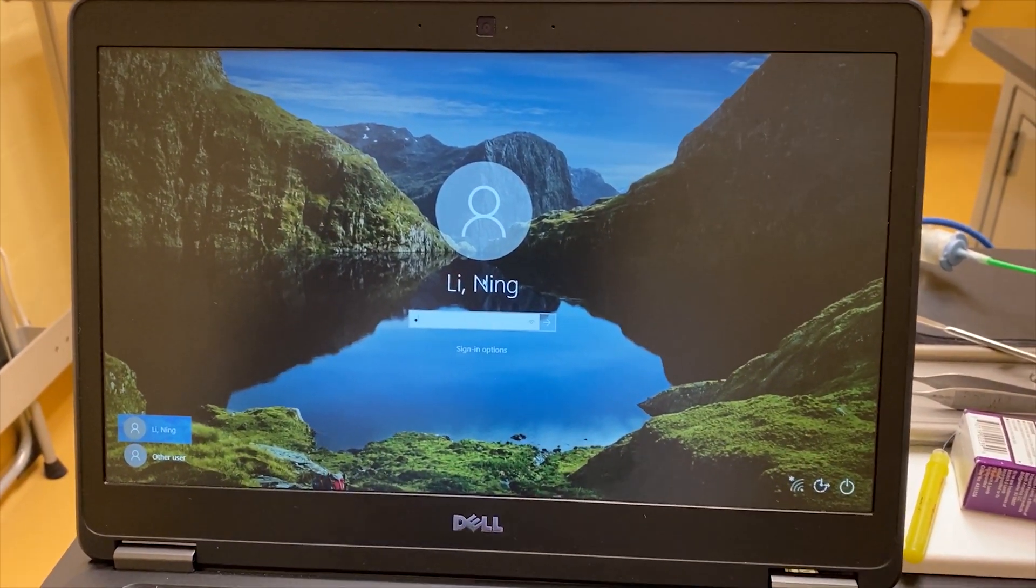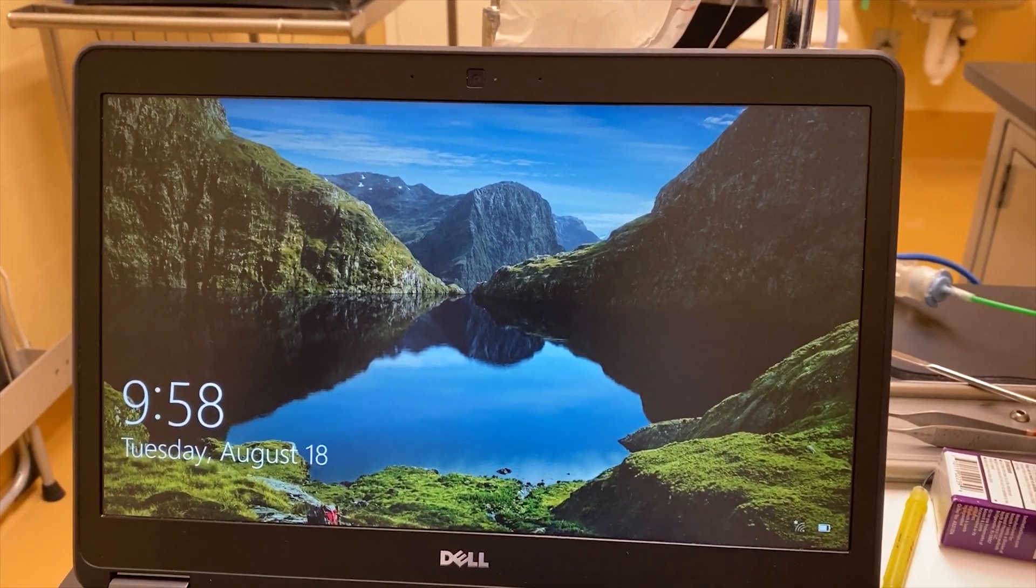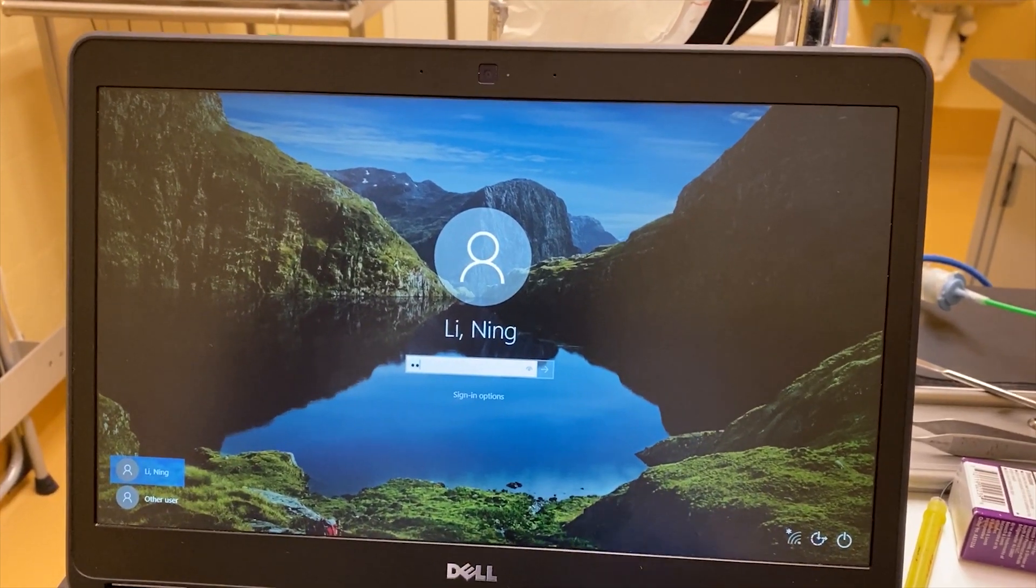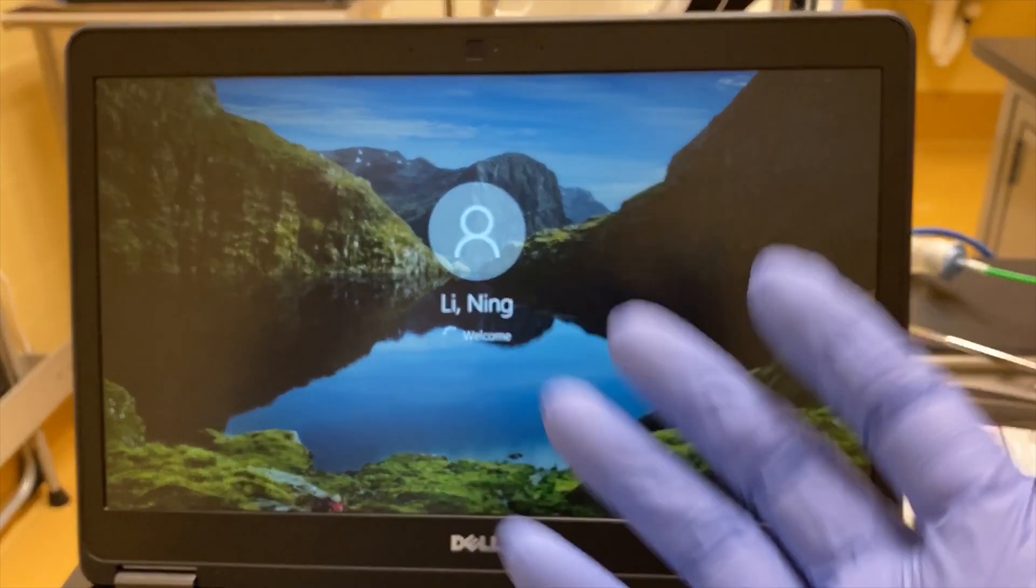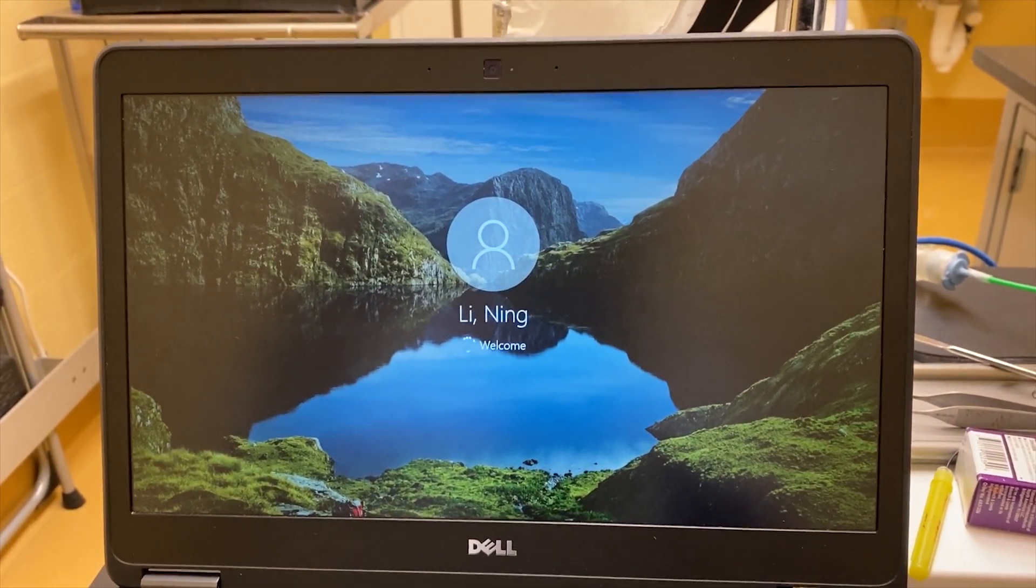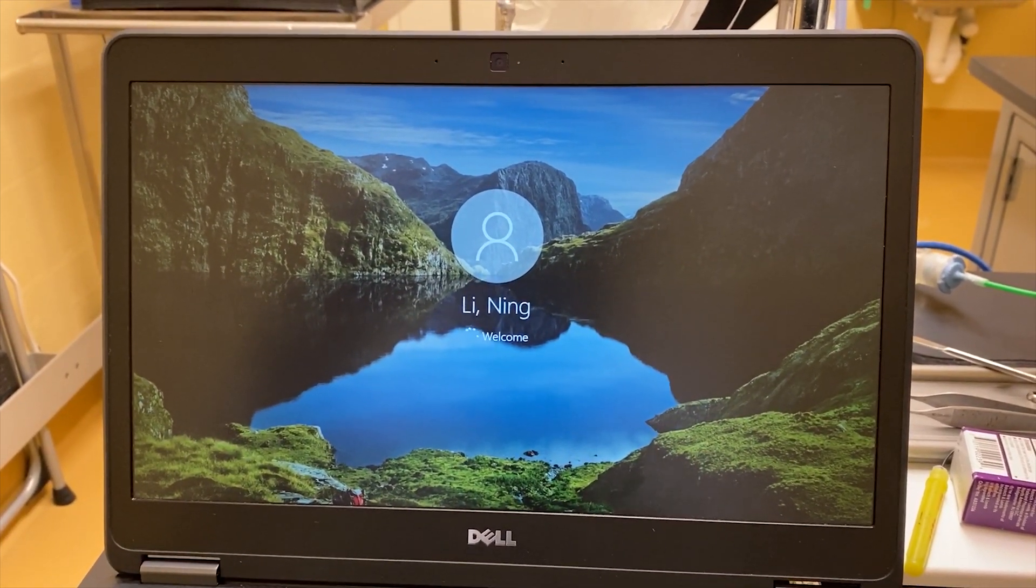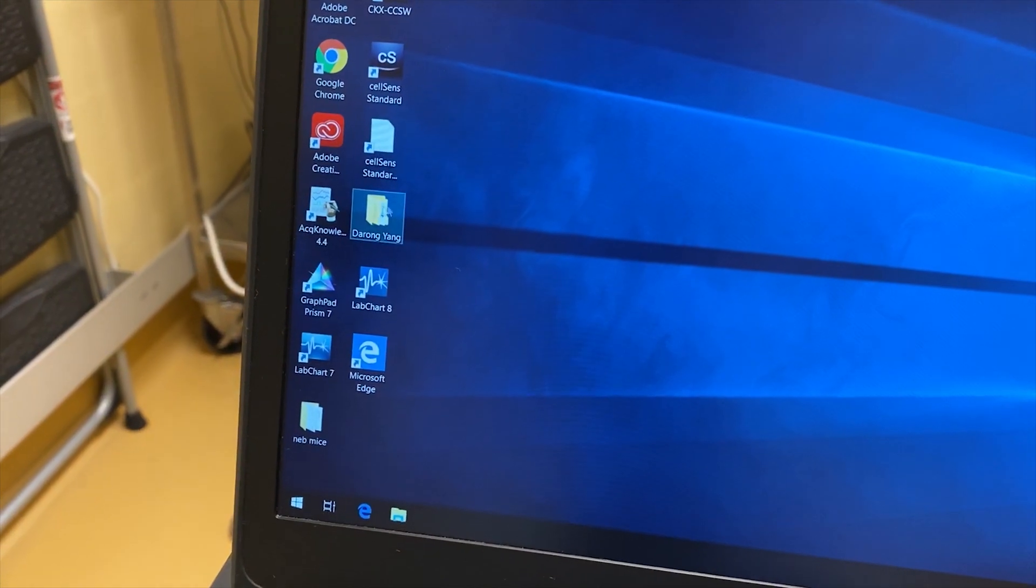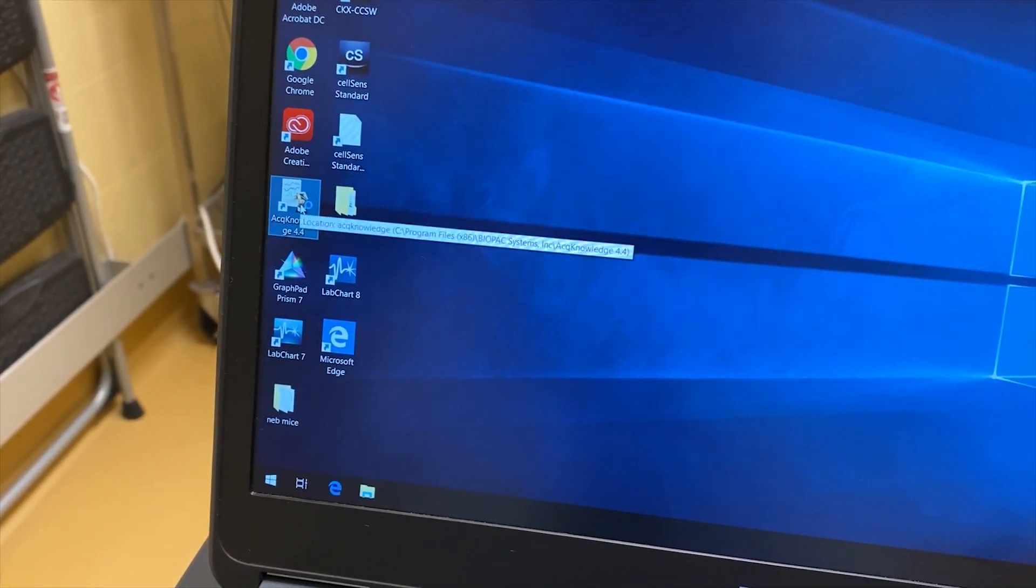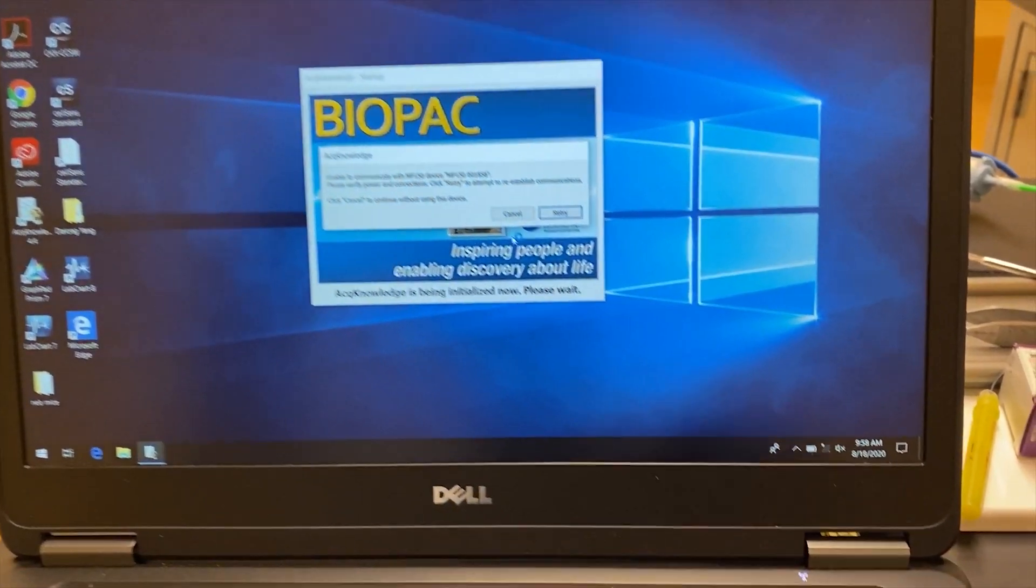And so this computer has a weird thing, you can see if you log in, you need to log in a second time. It's not your password, I don't know why, but you need to log in two times and you will get the desktop. It's a little slow and select the software, Acknowledge.